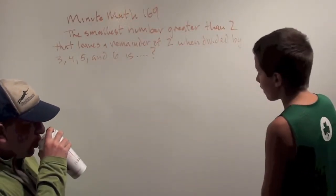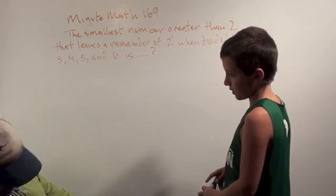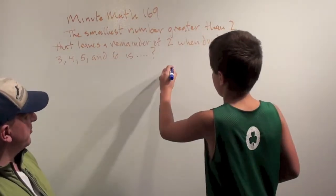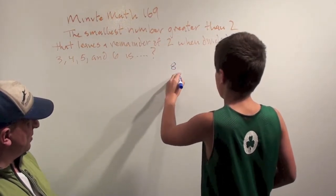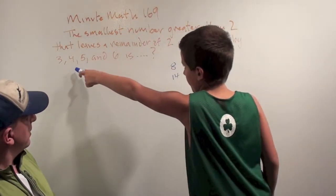So what are some ideas you have here? Well, we could try numbers that are 2 more than a multiple of 6. So 8 and 14. Okay. Well, 8 doesn't work because it's 4 times 2.